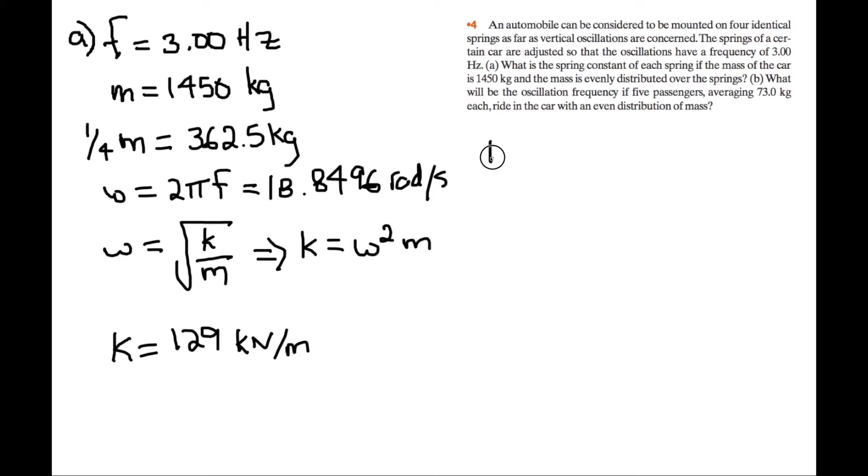So for part B then, we're trying to find out what the oscillating frequency is. So we can use the same formula, angular velocity is equal to root k over m. So we'll just do this for, we'll just do the k and m for one tire. So that means the mass on one tire is equal to 362.5 plus 5 over 4 times 73 kilograms. So this is there's five people evenly distributed over four wheels.